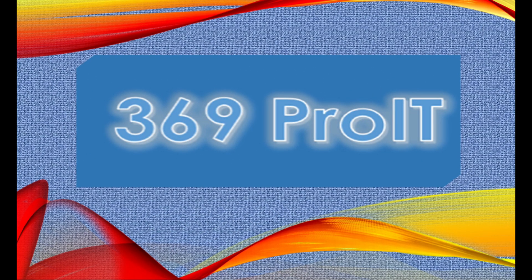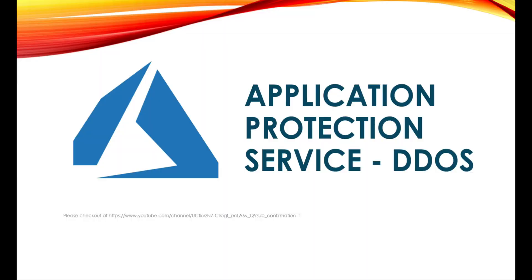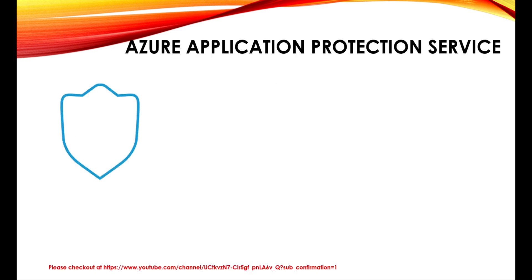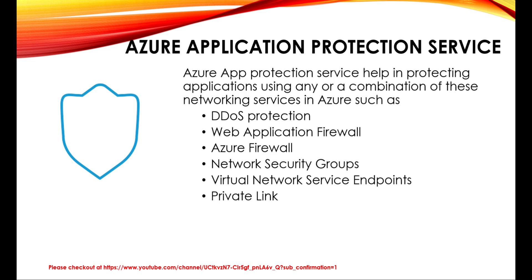Welcome back. In this session we are going to look at DDoS, that is distributed denial of service, and how Azure mitigates those attacks. DDoS is part of the application protection service provided by Azure. Azure application protection service helps in protecting applications using a combination of network services such as DDoS protection, web application firewall, Azure firewall, network security groups, virtual network service endpoints, and private link.